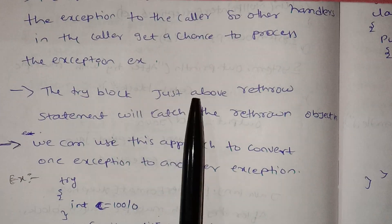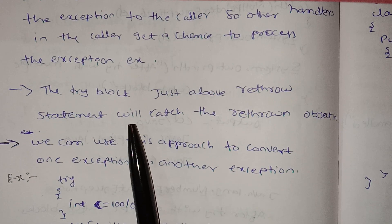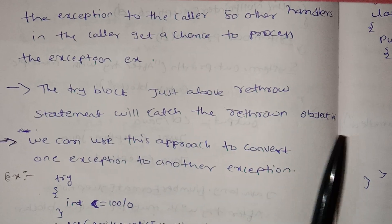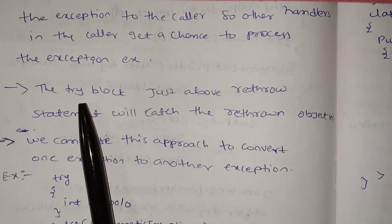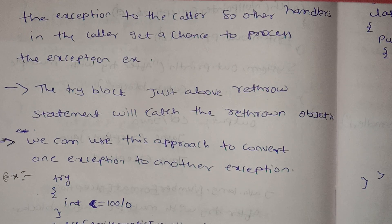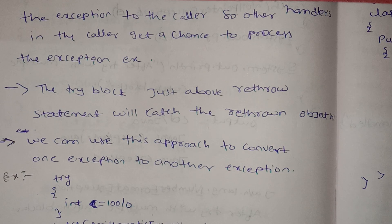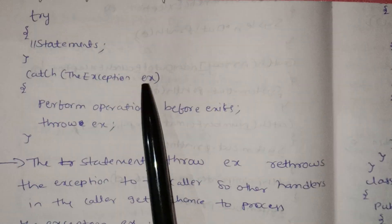The try block just above the re-throw statement will catch the re-thrown object. The try block contains doubtful code; except for the exception, we will throw the exception.